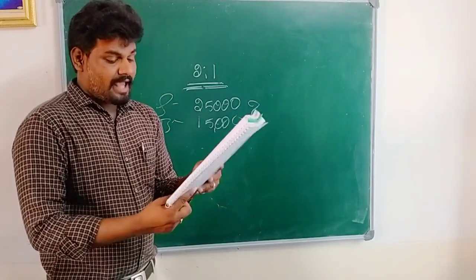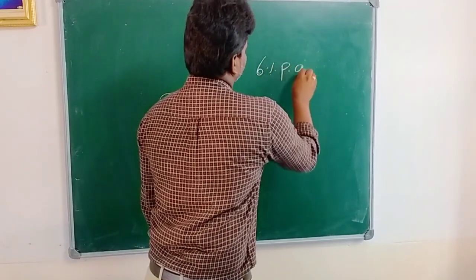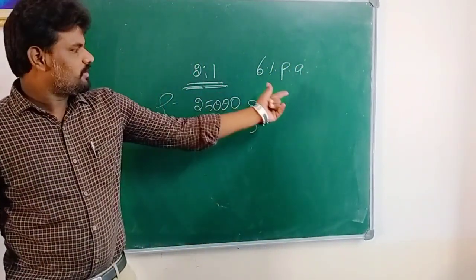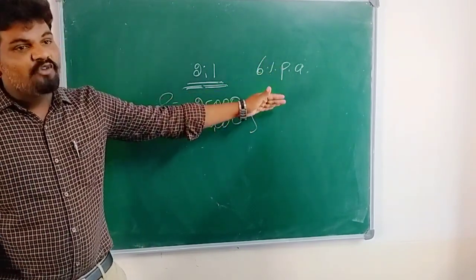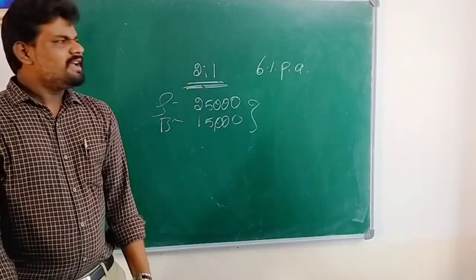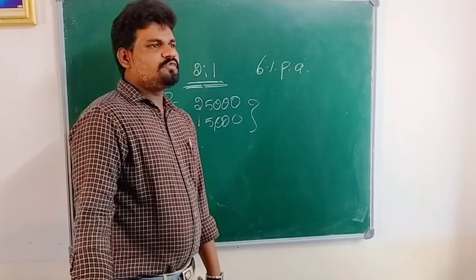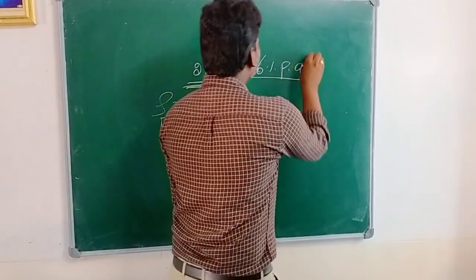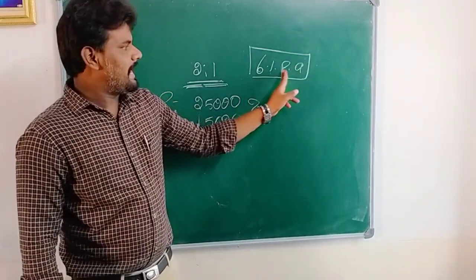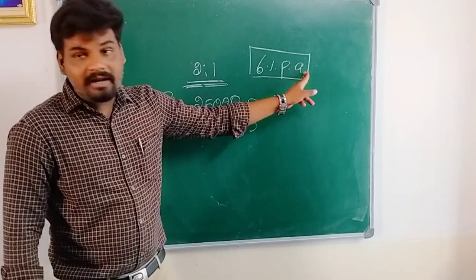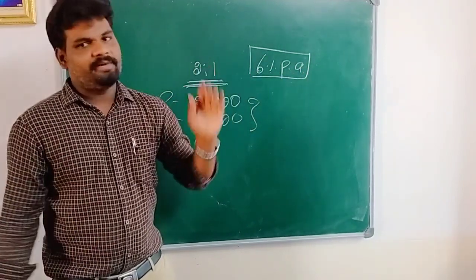Interest on capital is agreed at 6% per annum. This is very important. At the time of preparation of the Profit and Loss Appropriation Account, what is the rate of interest on capital they are getting? Each and every partner investing some capital to the business, and for that capital they need to get interest — annually they are getting 6% interest per annum.